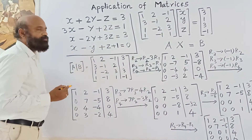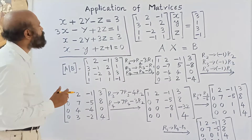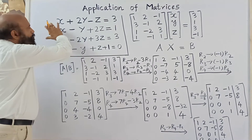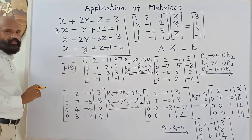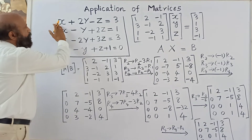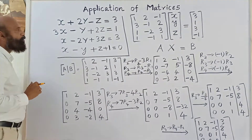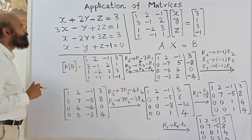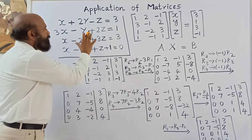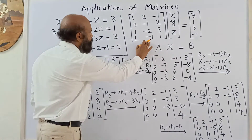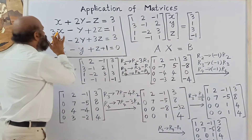Now let us solve a problem using the rank method, applying the Rouché-Capelli theorem. Here there is a system of linear equations with four equations but only three unknowns x, y, z. In this method, the number of equations need not equal the number of unknowns. The given system can be written in matrix form with the coefficient matrix: 1, 2, -1; 3, -1, 2; 1, -2, 3; 1, -1, 1.